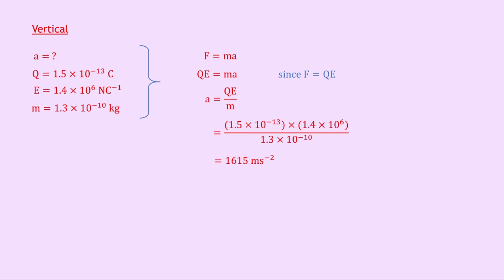Now we still don't have enough vertical information to find the time, but we do know some horizontal information that we can use to find the time. So we can find t from the horizontal motion since the time for the particle to travel vertically is equal to the time for the particle to travel horizontally. And that's a key rule for projectiles remember.